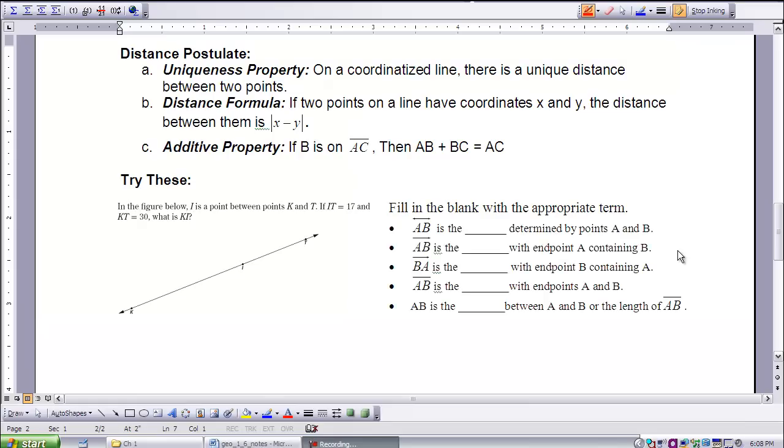The distance postulate is the last thing we're going to discuss in this lesson. It's our next set of rules, so to speak. The distance postulate, as stated in Euclidean geometry, which is once again the geometry that we are going to study mainly in this course, is stated as follows. Part A is the uniqueness property. On a coordinatized line, there is a unique distance between two points. Basically what that means is that if you have a coordinatized line, any two points on that line will have a distance.